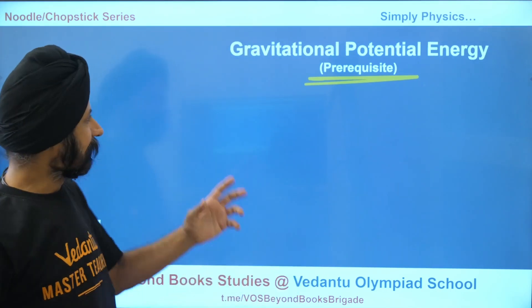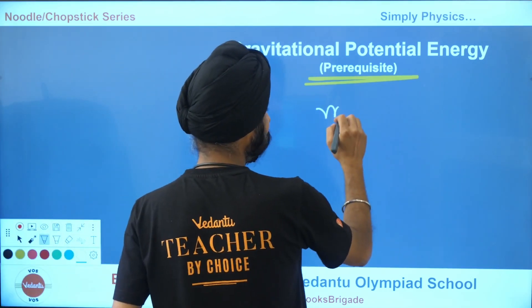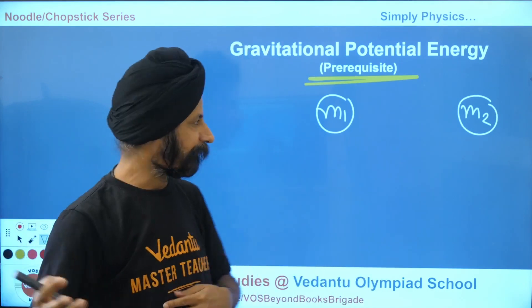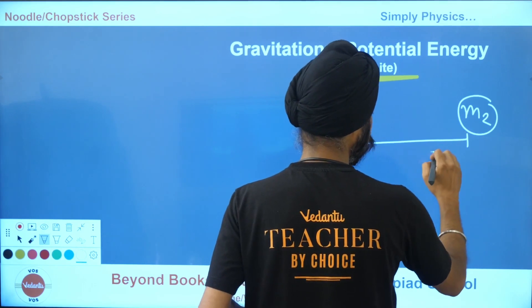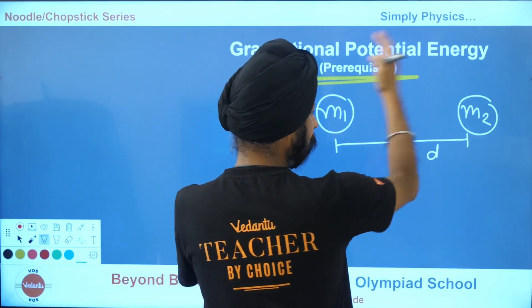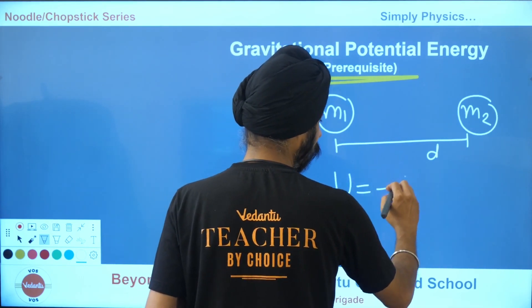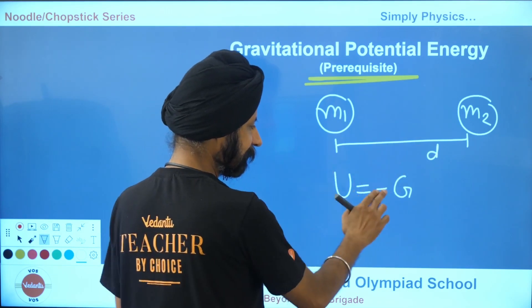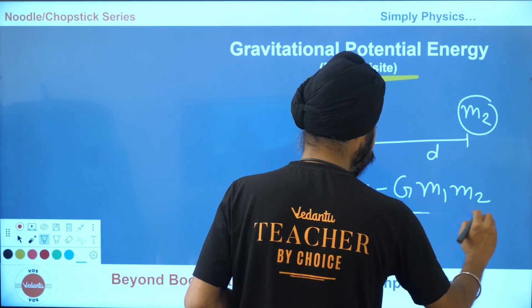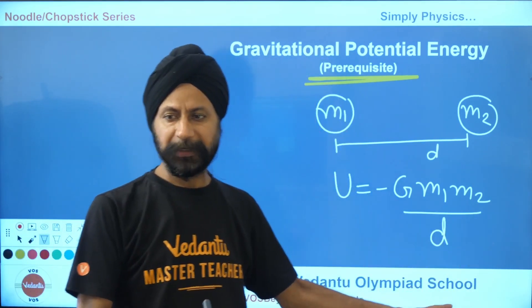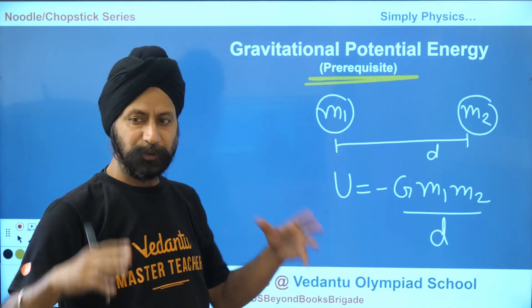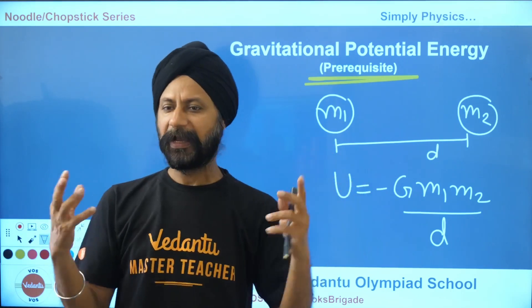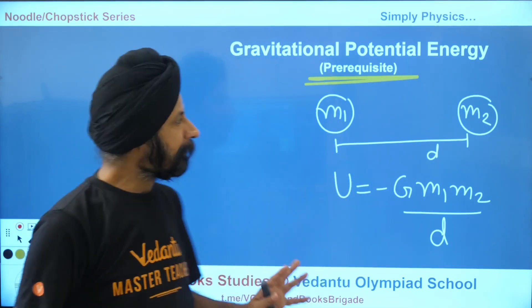The third prerequisite is gravitational potential energy. For two masses M1 and M2 at a distance D apart, there is a potential energy which is negative — because it's an attractive force. The potential energy is negative G times M1 times M2 divided by D. Note: the force formula has D squared, but the potential energy has D — not D squared — because when you integrate the force, you get one power of D less.